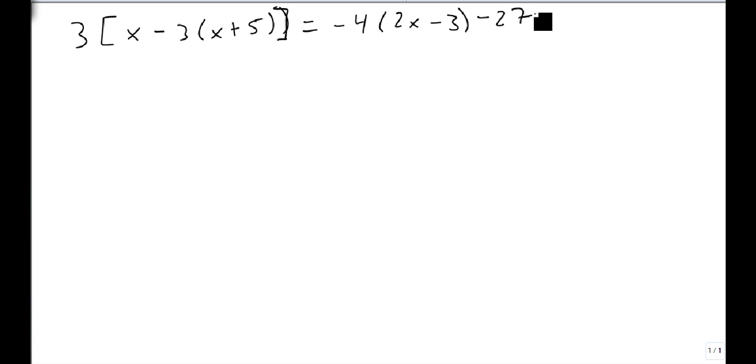Minus 4 times the quantity 2x minus 3 minus 27. So as we're looking at this one, again, we want to simplify. And so we're going to start inside the parentheses to get rid of the innermost set of parentheses here. So we're going to distribute the minus 3.